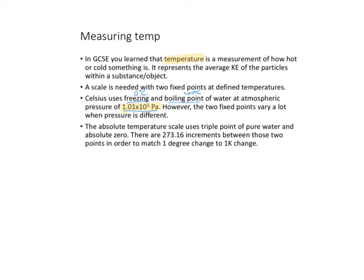So what Kelvin came up with is the absolute temperature scale. The Kelvin scale uses two fixed points: the triple point of pure water and absolute zero. I will explain both of these in a moment.